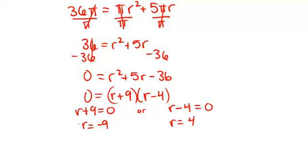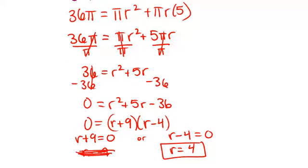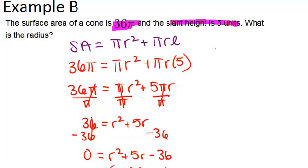Now the reason that r equals negative 9 doesn't make sense is how could you have a radius that's negative 9 units long? So that doesn't make sense in the context of this problem, so our only answer is that r equals 4. And it will just be 4 units, because those were the units that were given.